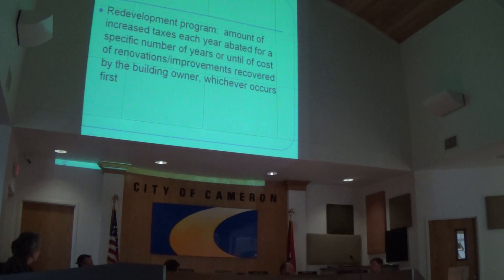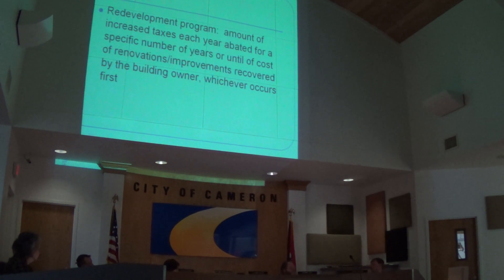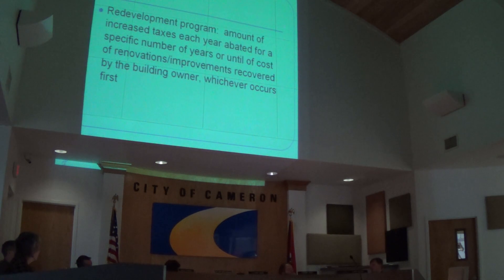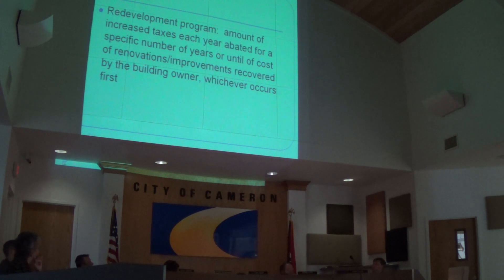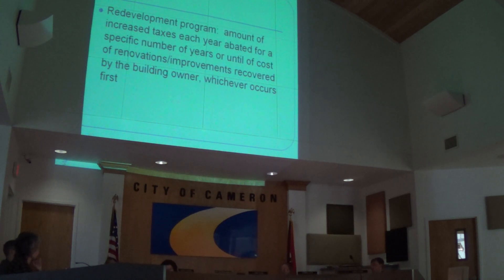The city has to give notice to the taxing jurisdictions, and there's a public hearing where the school district can come in and express concerns. There would be a development agreement between the city, the URC, and the developer specifying how much abatement is provided until the investment is recouped. The county and school district would still receive their base taxes, and once the abatement period ends, you can fully tax the improved property again.